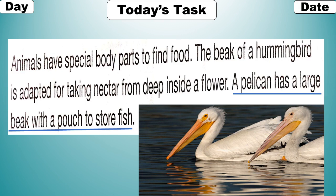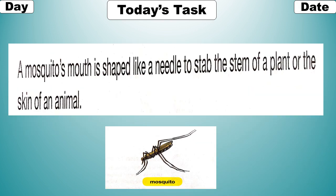Animals have special body parts to find food. The beak of a hummingbird is adapted for taking nectar from deep inside a flower. A pelican has a large beak with a pouch to store fish. Animals have special body parts to find food.